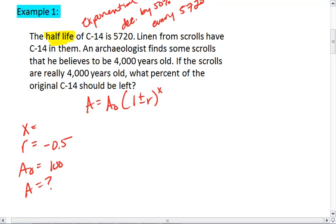Meaning, if we've gone through 4,000 years, and we take 4,000 divided by 5,720, we get 0.699, or 0.7. So we've gone through 0.7 of a half-life.